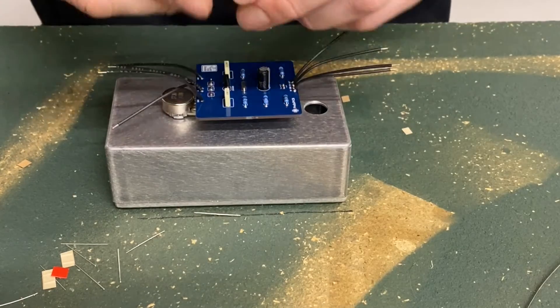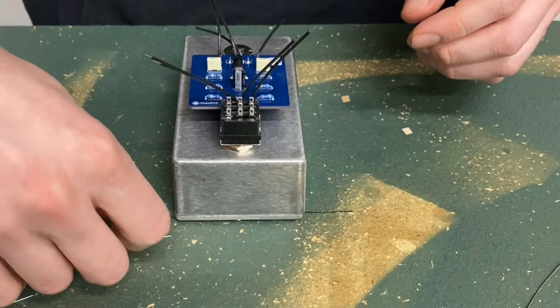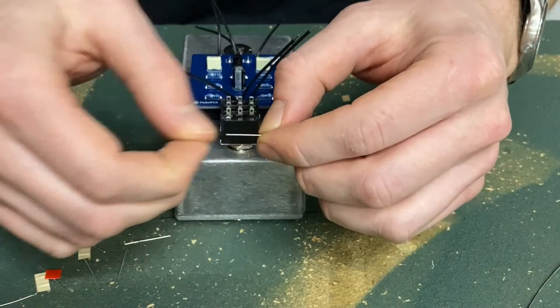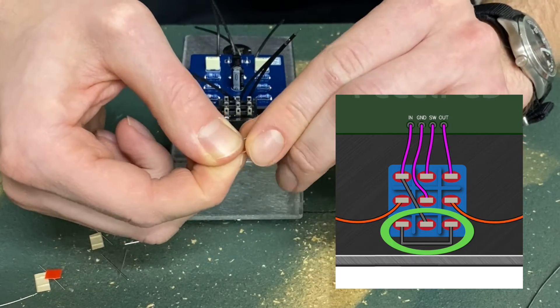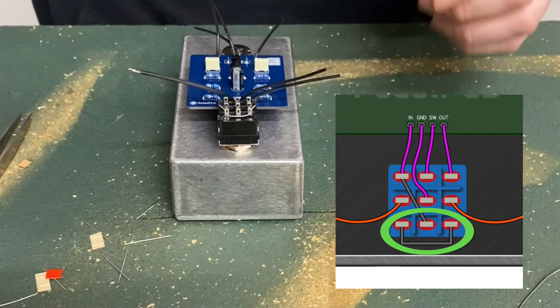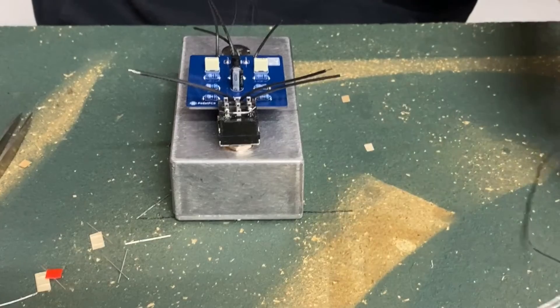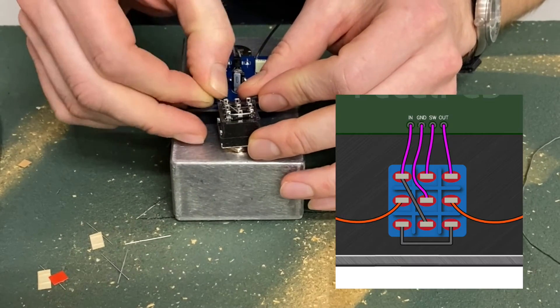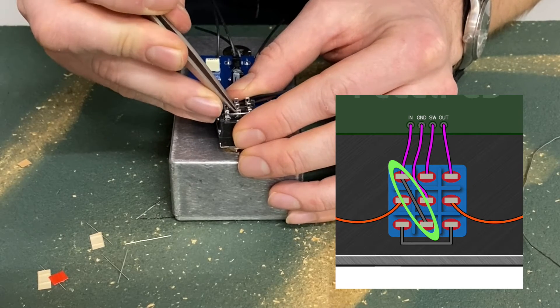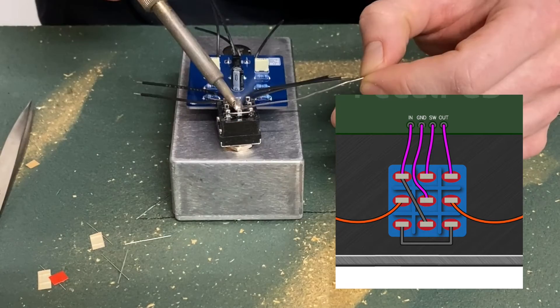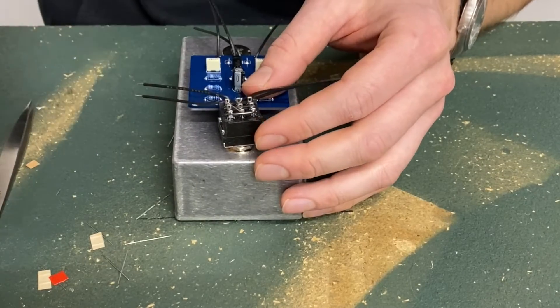Time to wire up the footswitch. Grab the 3PDT footswitch and install it finger tight on the top of the enclosure. Grab a clipped component leg and shape it so it fits in these outer bottom lugs of the footswitch. Solder in this jumper wire on both sides. Now make another jumper wire and insert through these two points. Don't let it rest on any other lugs or the other jumper wire. Only solder in the bottom lug for now. We'll get to the other one soon. Trim off the excess.